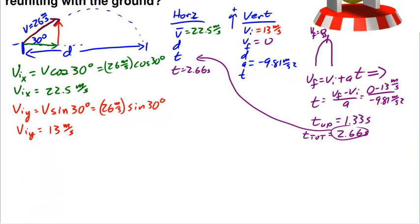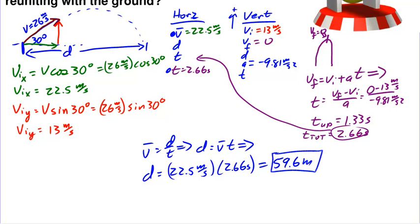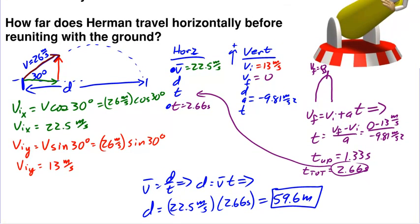Let's give ourselves a little more room here. To finish off the problem and find out how far he goes horizontally, we know v average, we know t. We can use v average equals d over t. Rearrange for displacement, d equals v average times t, which implies that d equals 22.5 meters per second times the time of 2.66 seconds. Multiply all that together and we find that Herman travels about 59.6 meters. That is how far Herman traveled from launch until he hit the ground. This distance right here must be 59.6 meters.